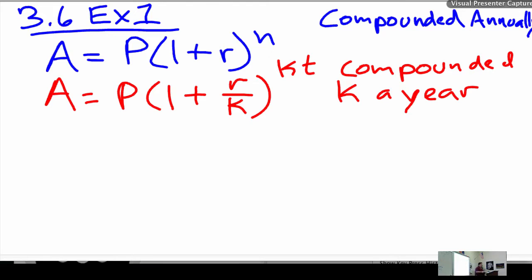Quarterly would be 4 times a year, so K would be 4. If it's done monthly, that's 12 times a year, so K would be 12. And then lastly, this one is compounded continuously.